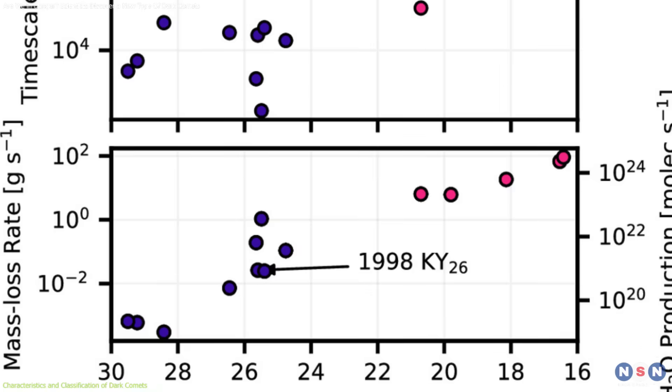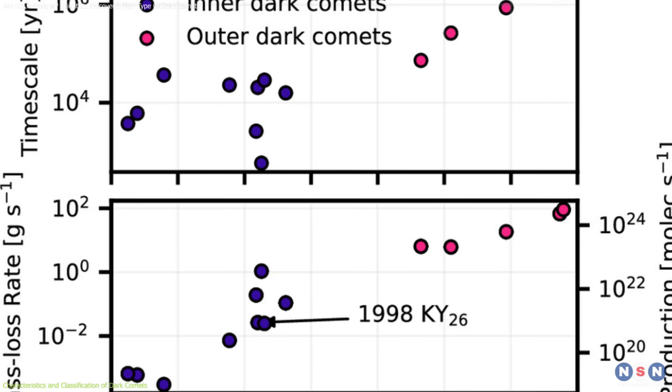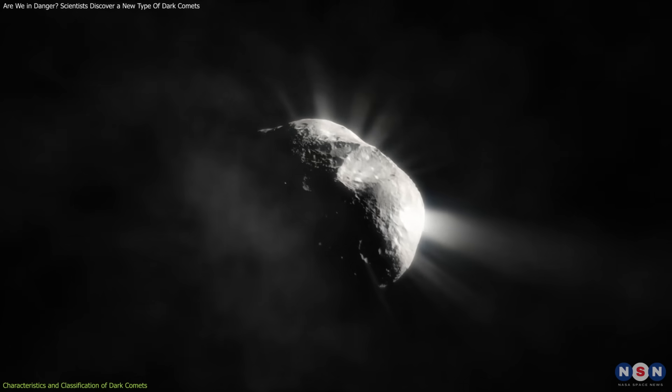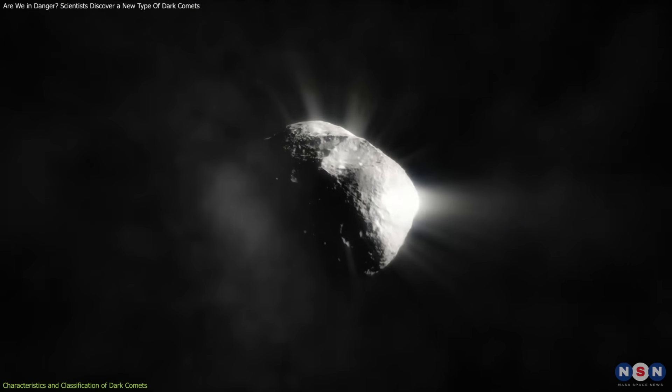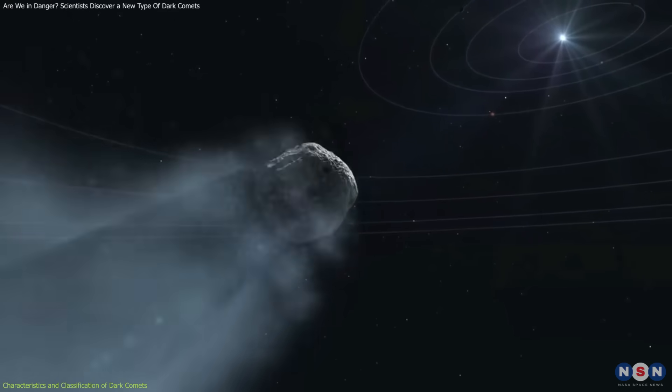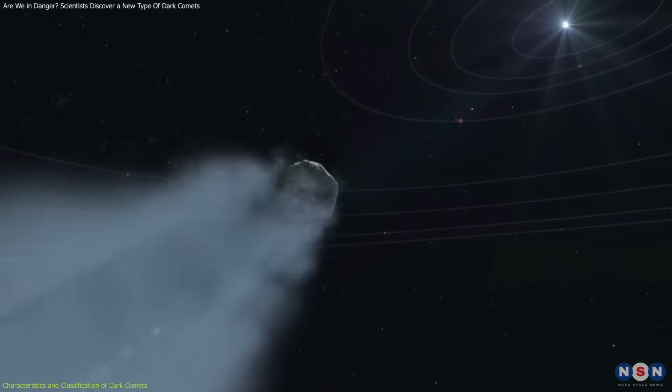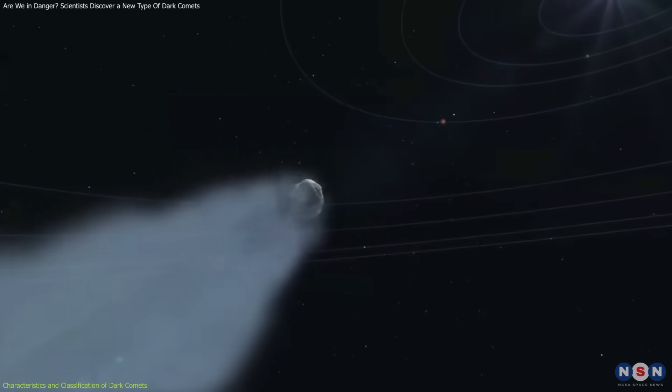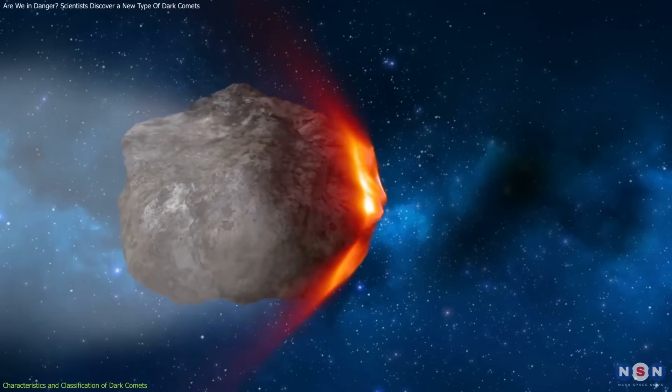This distinction was made possible by analyzing the orbits and reflectivity, or albedo, of these objects. Traditional comets accelerate due to outgassing, where volatile materials like water ice vaporize near the sun, creating a push.